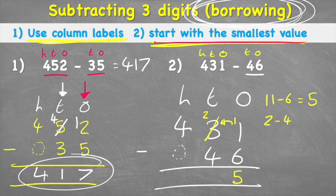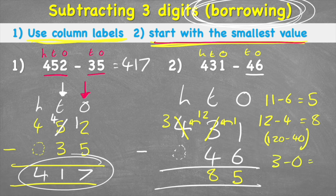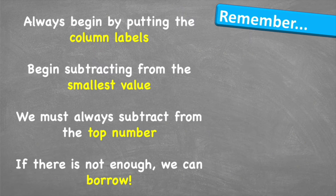Now the tens column says two subtract four. Even though this really means 20 subtract 40, I can't do it without getting into negative numbers. So I look next door at the hundreds: I cut the four down to a three and borrow one, putting a one in front of the two to make 12. So 12 subtract 4 equals 8, giving me eight in the tens column. The hundreds column says three subtract zero, which equals three. The answer to 431 subtract 46 is 385.